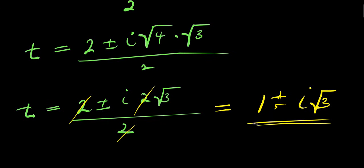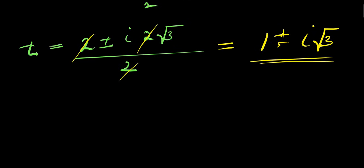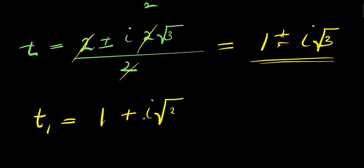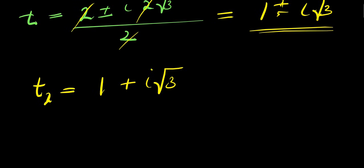So we have two complex values for t: t1 equals 1 plus i times root 3, and t3 equals 1 minus i times root 3.